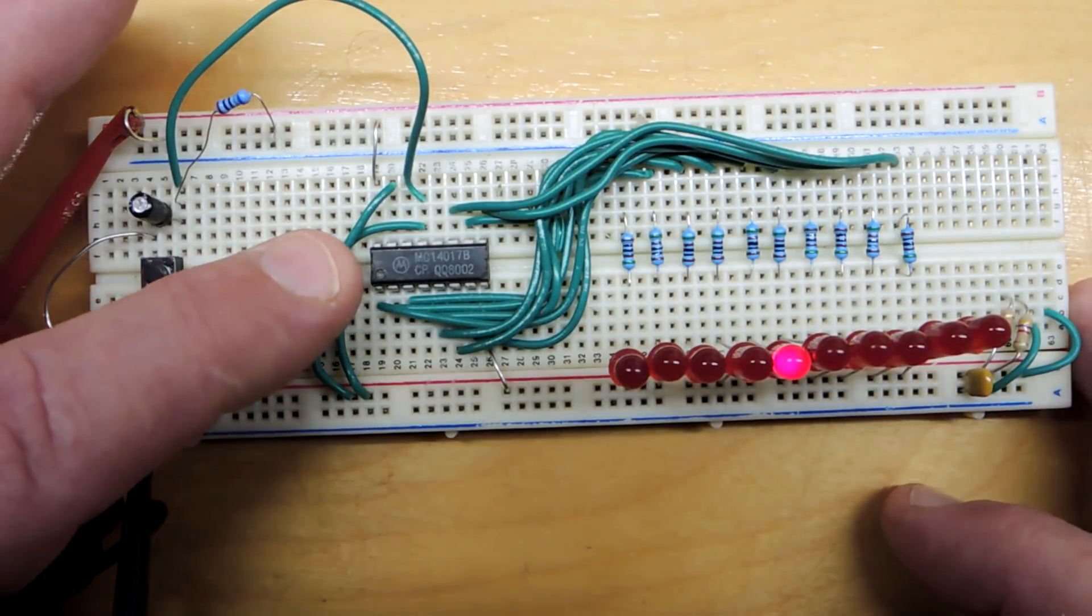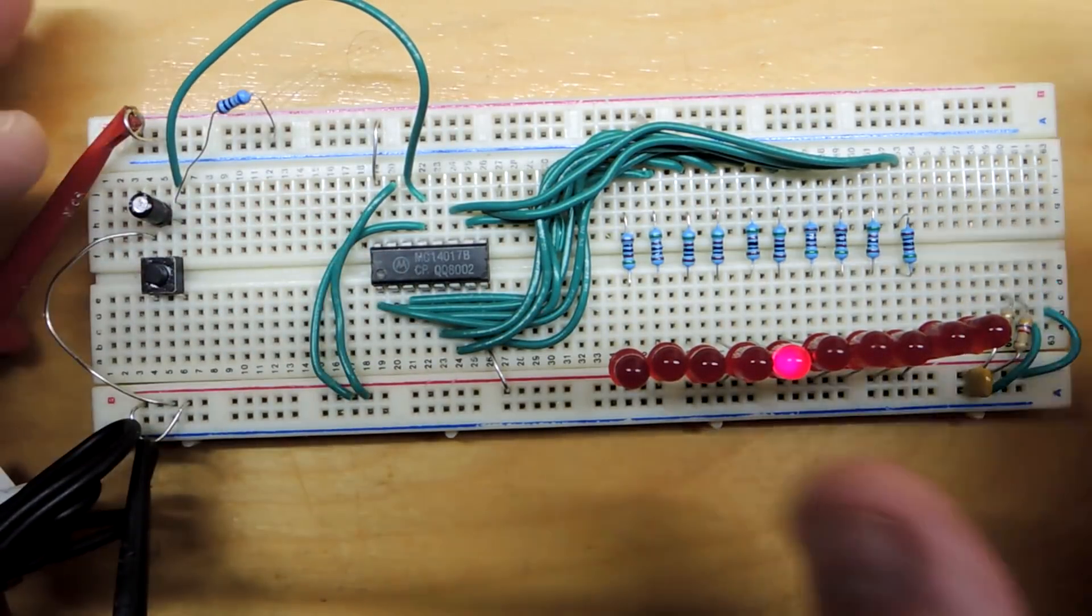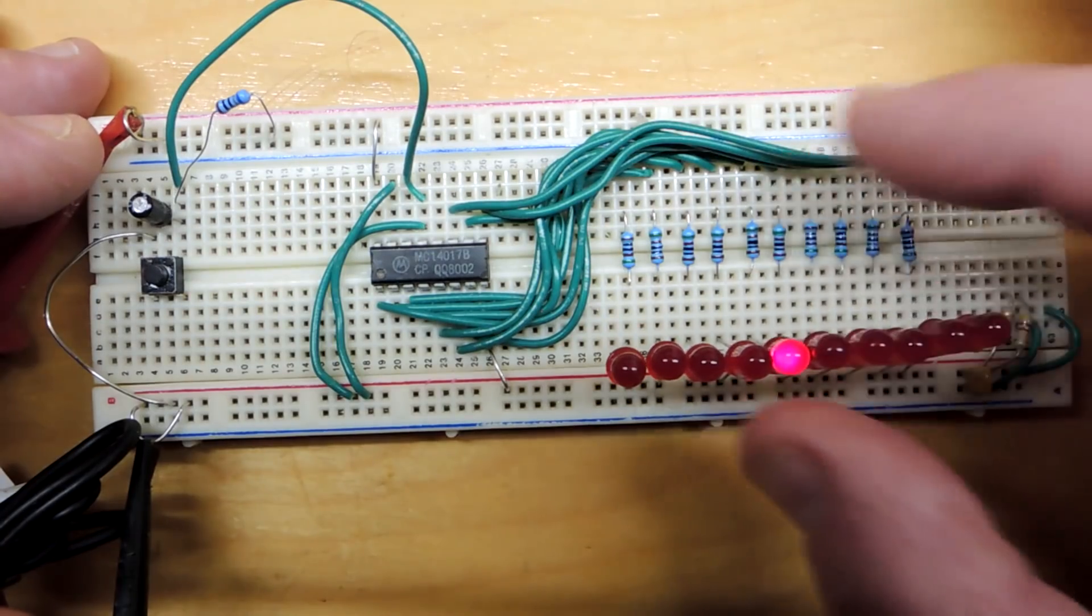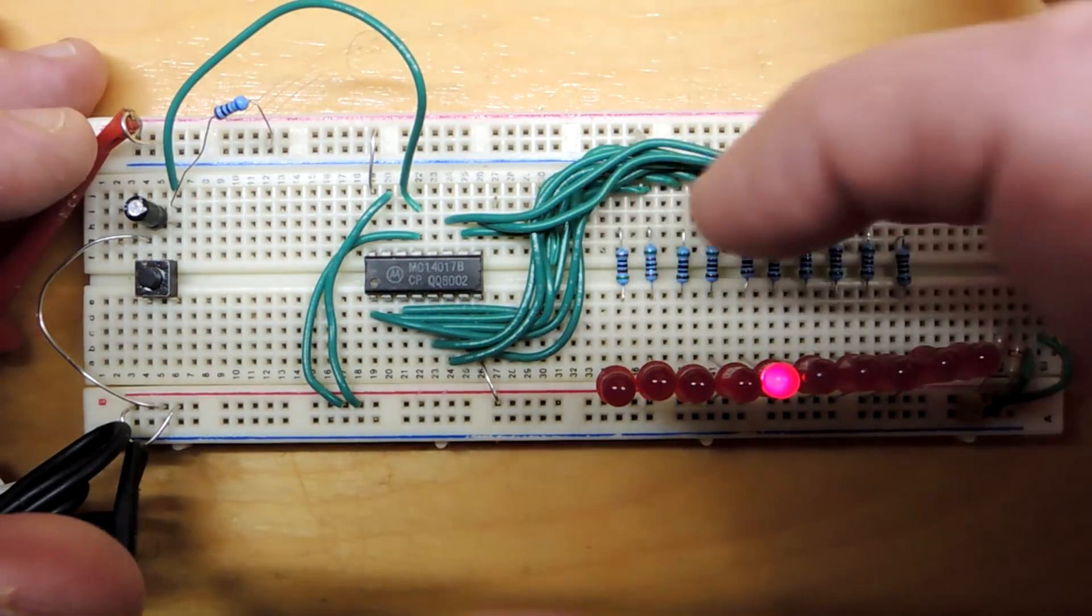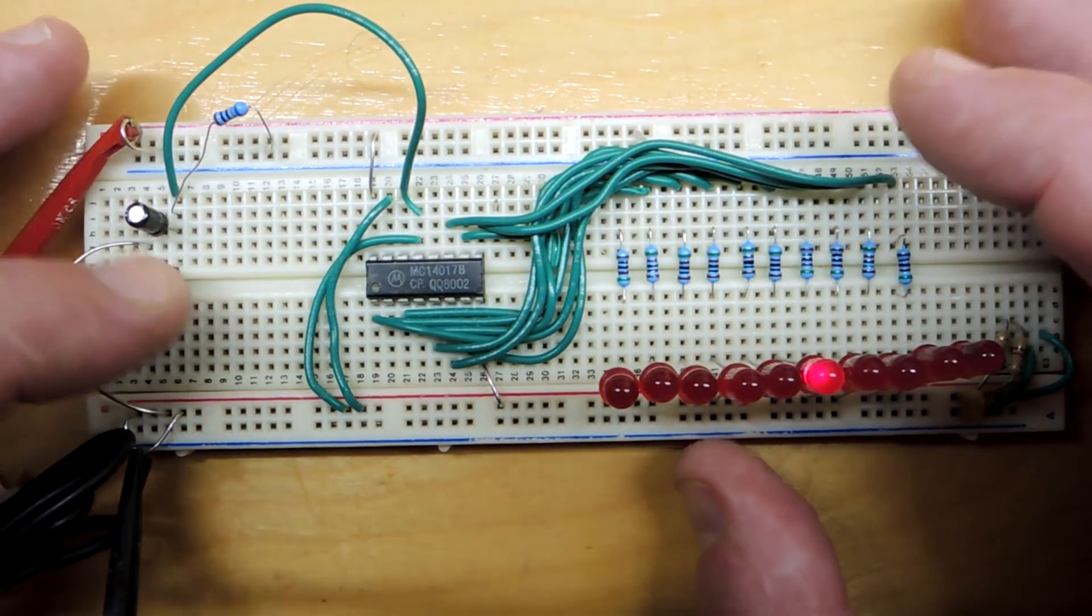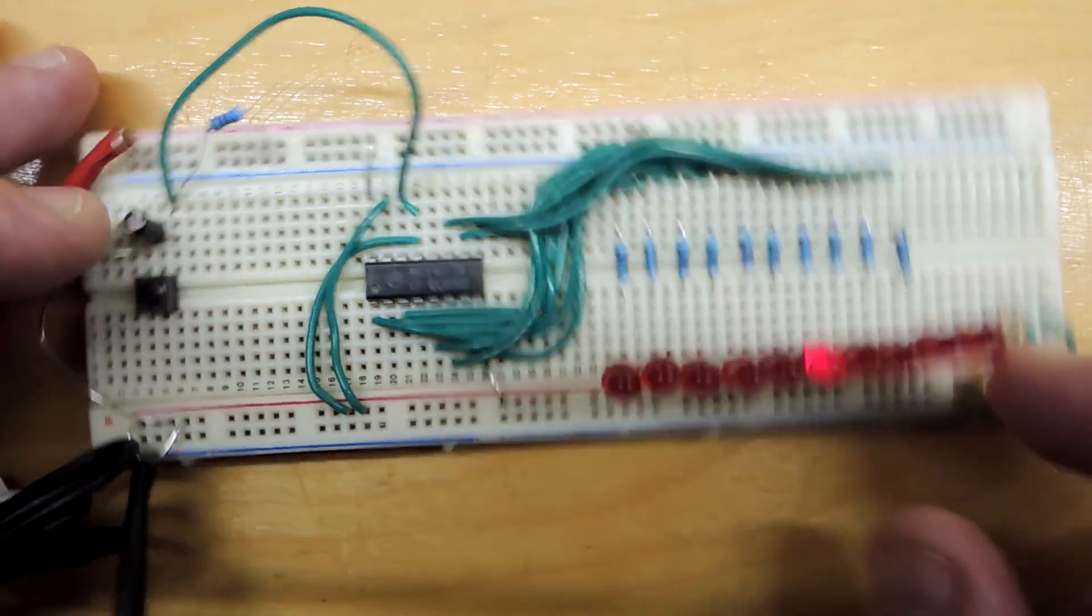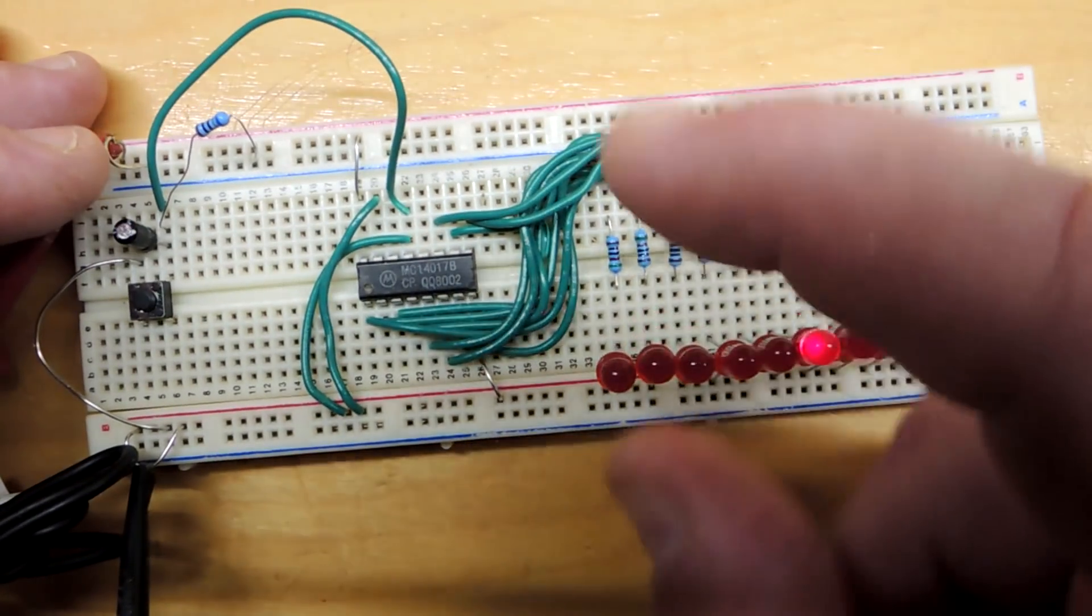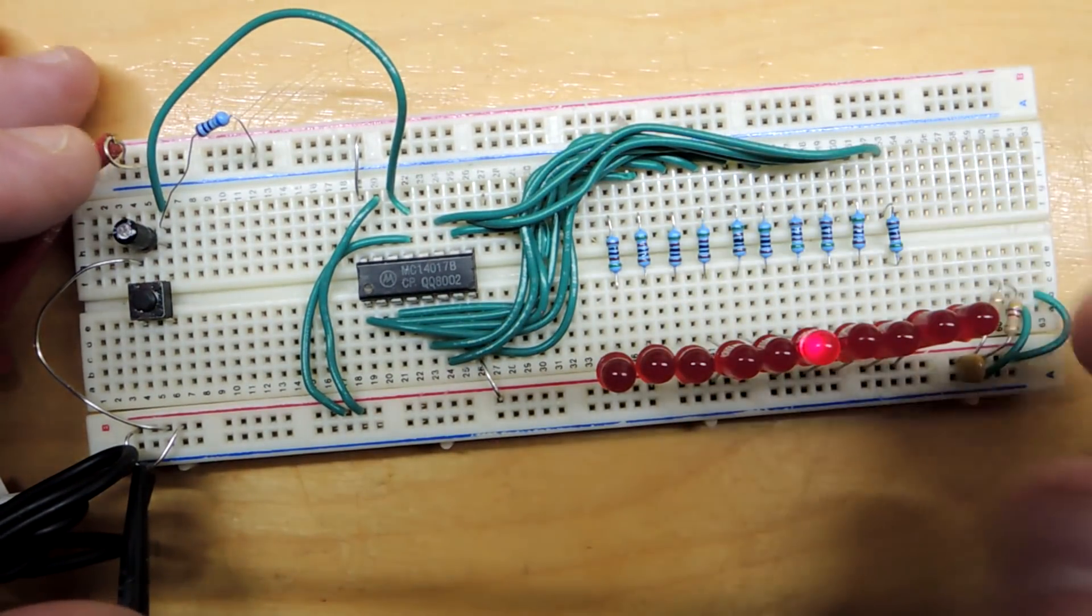In terms of more industrial applications, this kind of circuit here is very helpful for selecting various inputs. For example, you can imagine you've had an audio mixer board. You could use the outputs of this decade counter to select various inputs, and then every time the user presses a button on the front, it could be used as a control signal to move a different signal into a circuit.